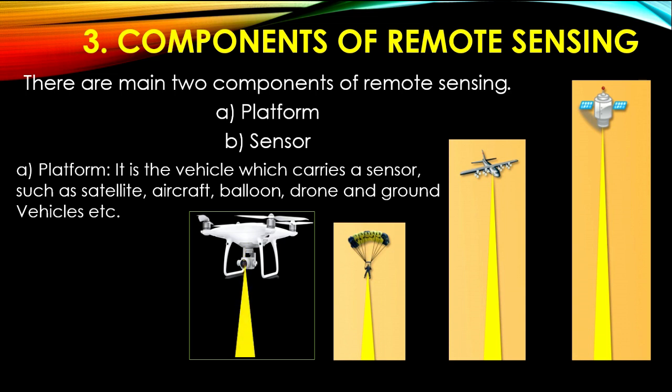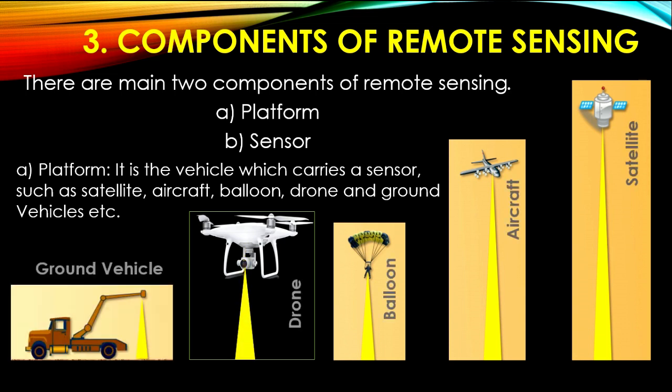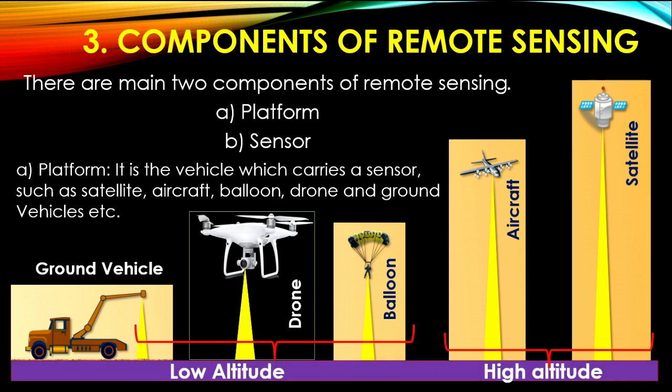Here are the different types of platform presented in the picture. Some are high altitude and some are low altitude platforms. The high altitude platforms are satellites and aircraft, and the low altitude platforms are balloon, drone, and ground vehicles.